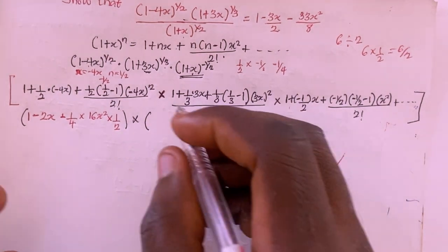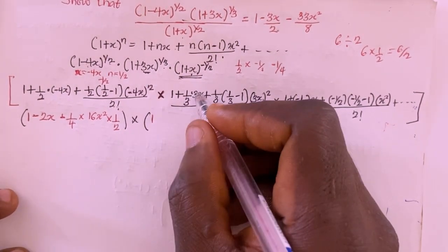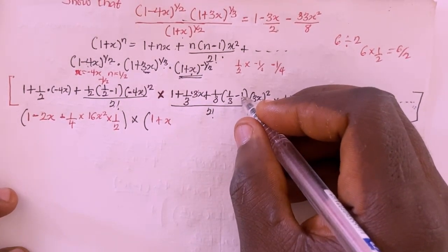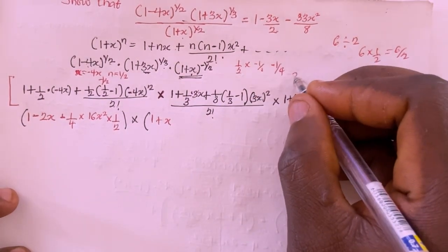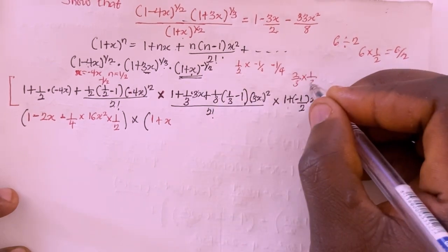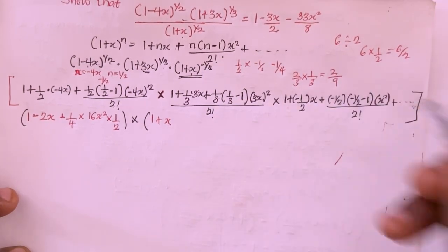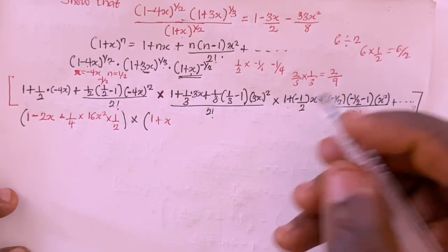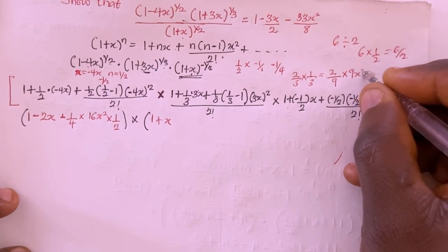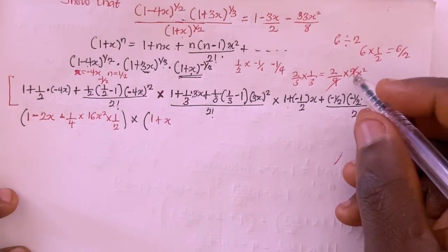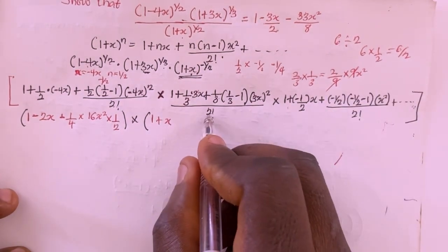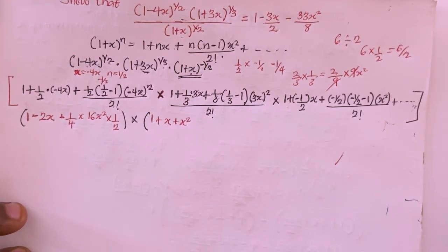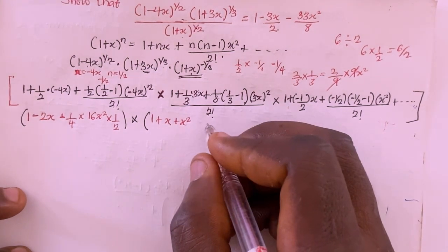For the second expansion, the 3 in (1/3) cancels with the 3 in 3x, giving +x. For the x² term: (1/3 - 1) = -2/3, so (1/3)(-2/3) = -2/9. Then (-2/9)(9x²) divided by 2 factorial: the 9s cancel giving -2x²/2 = -x². So the second expansion simplifies to 1 + x + x².